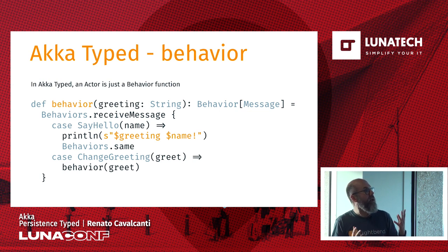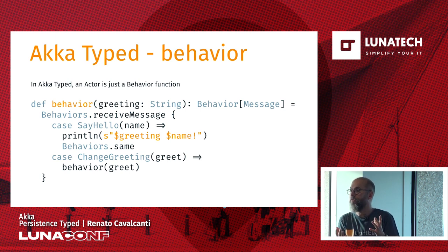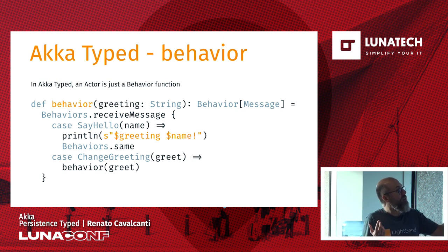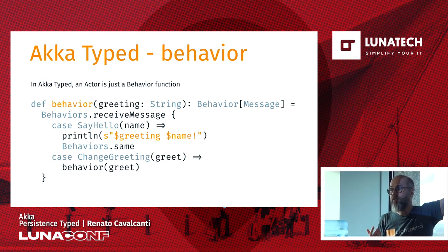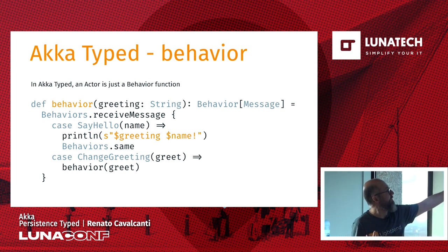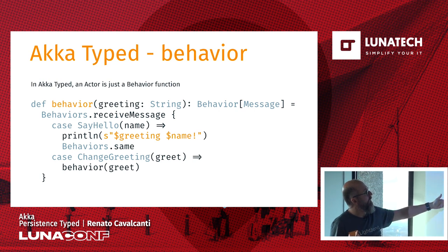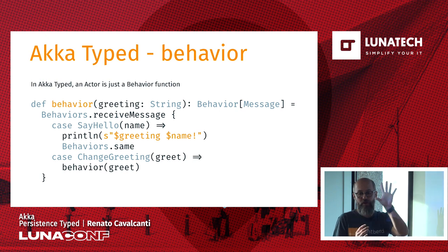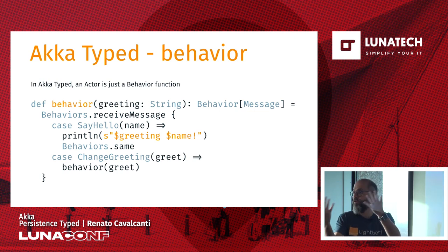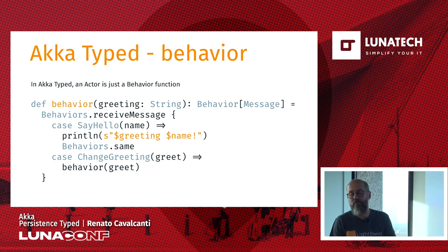What we are doing here is creating a behavior. Different from ACCA untyped, you don't extend an actor but you define a function. That function is a behavior — basically a function from the type of message I can send. In our case it's called message. You define how you're going to handle that. For the say hello case, I just print something and return the same behavior. So basically it's a function from the incoming message to the next behavior.